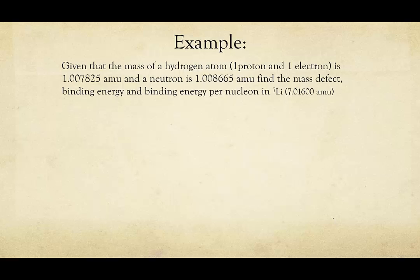Let's do another example straight through. Given the mass of a hydrogen atom and a neutron, find the mass defect, binding energy, and binding energy per nucleon in lithium-7. And I give you the mass of lithium-7 here. We need to calculate our expected value for the mass of lithium.